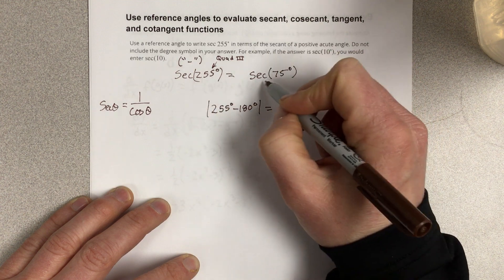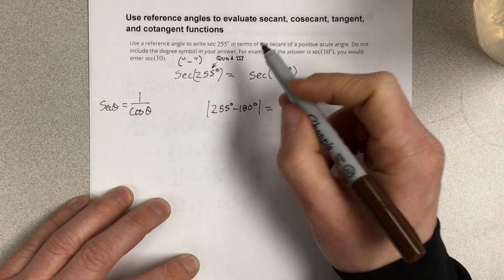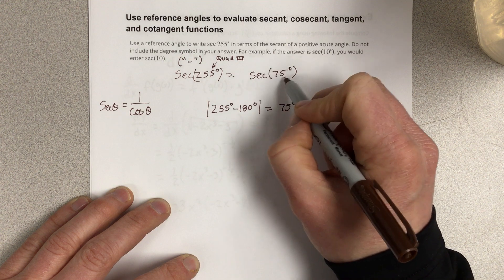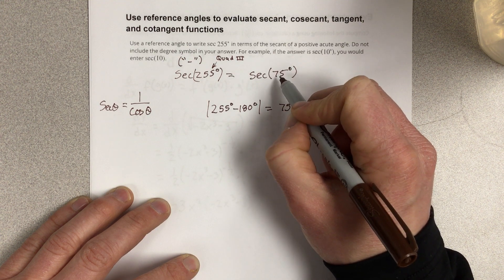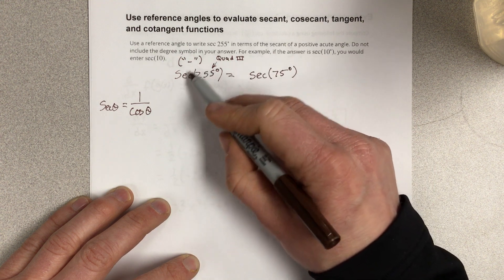So, secant 255 is equal to secant 75 degrees, but they're not exactly equal because secant 75 is actually positive in the first quadrant, whereas this is in the third quadrant.